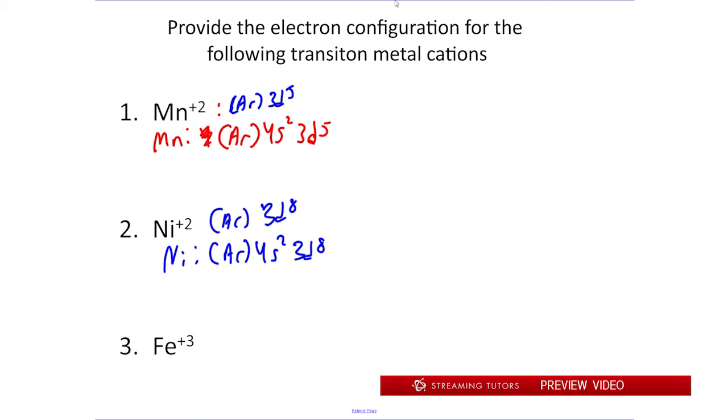And then finally for Fe+3, we have iron metal is just Ar 4s2, 3d6. Then we take away three electrons. So that's 2 from the 4s and then 1 from the 3d. And that leaves us with 3d5. You can also see that Fe+3 is isoelectronic with Mn+2, meaning they have the same electron configuration.